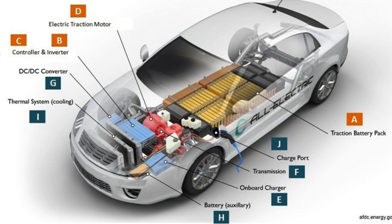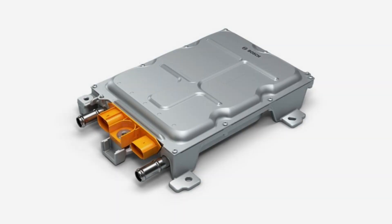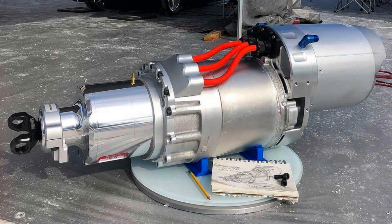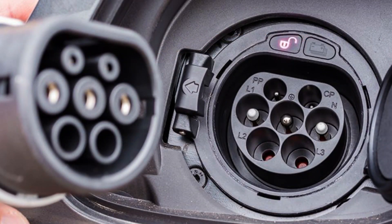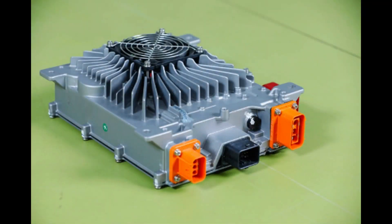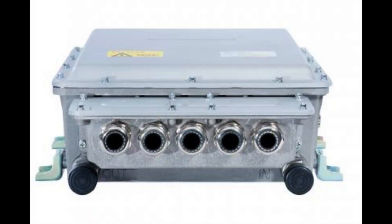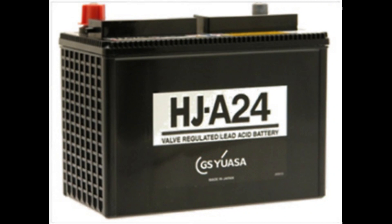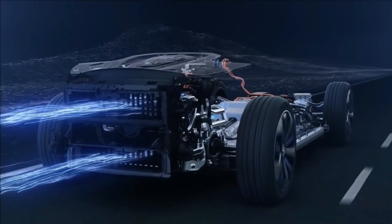The main parts of an electric vehicle are: traction battery pack, DC-DC converter, electric motor, power inverter, charge port, on-board charger, controller, auxiliary batteries, thermal system, and transmission.